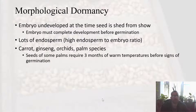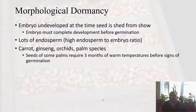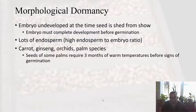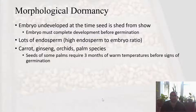There is also morphological dormancy, where by the time the seed is shed, the embryo is not fully developed and not ready for germination. There just needs to be a natural period of time for the embryo to fully develop. This is true for carrots, ginseng, orchids, and some palm species. Some palms require three months of warm temperatures before showing signs of germination, because the embryo continues to develop after the seed is shed from the plant.